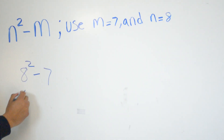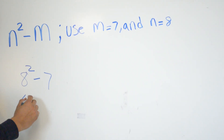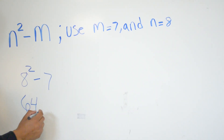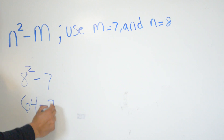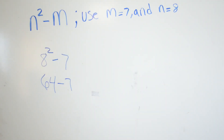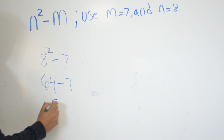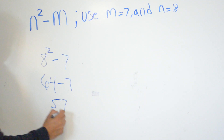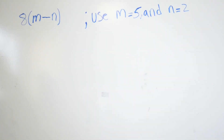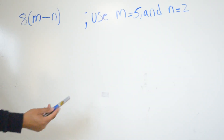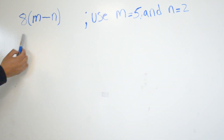8 squared is going to be 8 times 8, which is 64. Then 64 minus 7 is going to be 57.